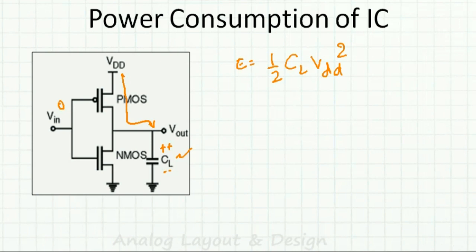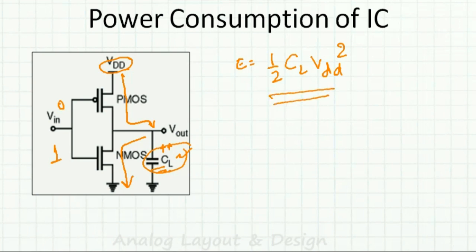When the input is low and CL is charging, there is no power wastage — the entire energy from VDD gets stored in CL. But when input goes high, NMOS turns on, and the entire energy stored in the capacitor (½CV²) flows to ground and gets wasted.